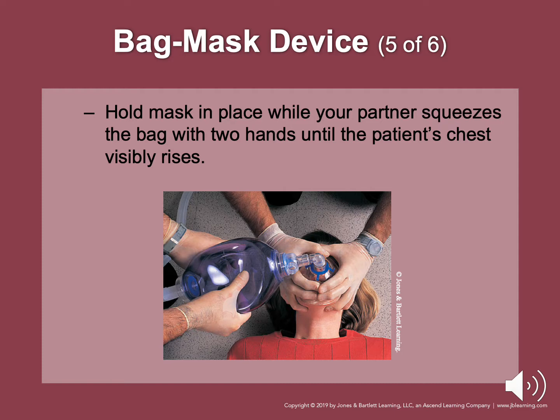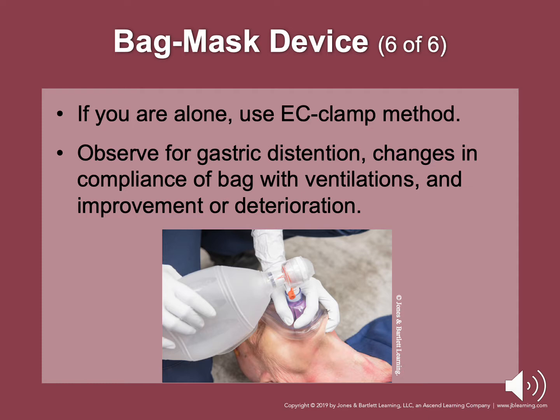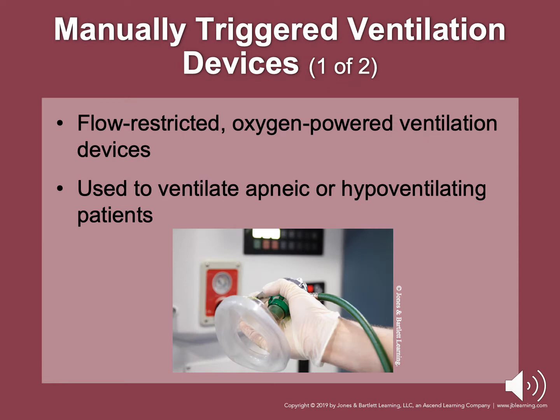Flow-restricted oxygen-powered ventilation devices are used to ventilate apneic or hyperventilated patients and can also provide supplemental O2 for breathing patients. Many demand-trigger ventilation devices are triggered by negative pressure generated by inhalation, delivering almost 100% O2. They allow a single rescuer to use both hands to maintain mask seal and reduce rescue fatigue, especially on extended transports. It is virtually impossible to assess for lung compliance with these devices, and the pressure necessary to ventilate will vary with patient size — excessive pressure can cause esophageal ventilation.